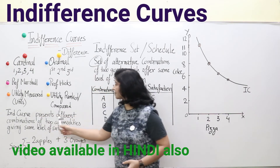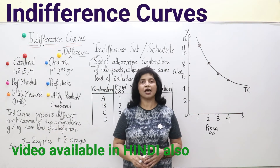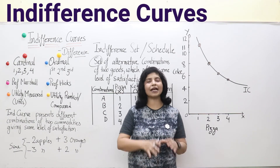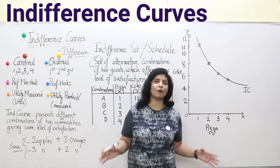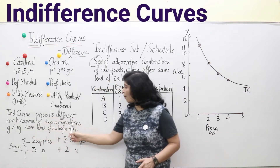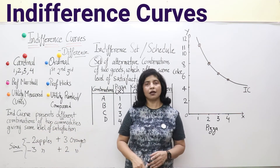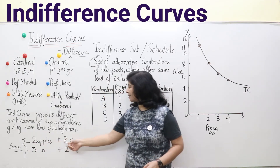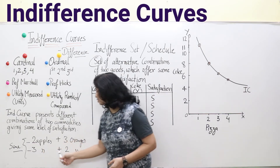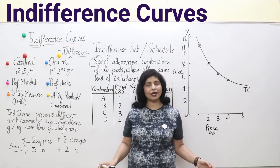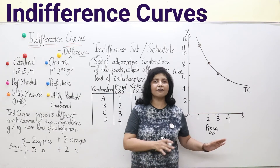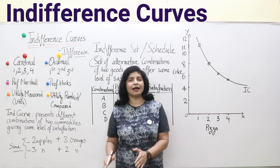An indifference curve presents different combinations of two commodities — we take only two commodities for simplicity, though in real life we consume many. For example, two apples plus three oranges is combination A, and three apples plus two oranges is combination B. It makes no difference to the consumer — they are indifferent between these combinations.